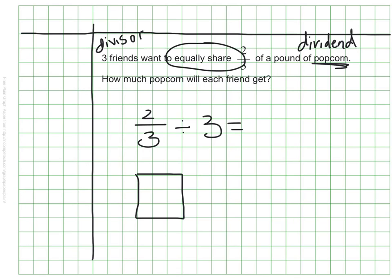I'm going to start again with my model. This would represent a whole pound of popcorn. They only have two-thirds of a pound, so I'm going to fill in two-thirds to show how much popcorn we're working with, but then we want to divide that by three, so we want to cut that into three parts, and each person will get one of the three parts.